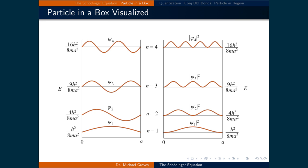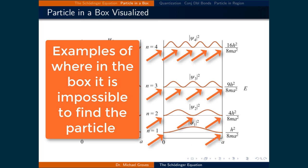These are probability distribution functions, depending again on the value of n. Take note that it is not equally likely for the particle to be found everywhere in the box. There are regions where the probability of finding the particle goes to zero.